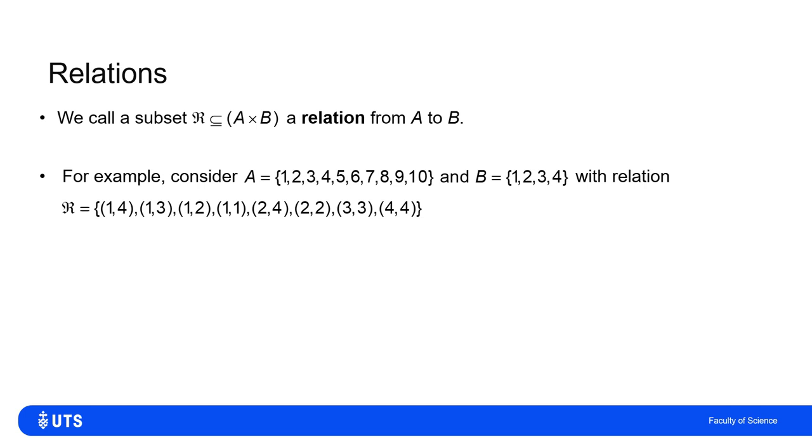Now you might be able to see what sort of relation this is describing. In logical notation, we can say the subset R is the set of ordered pairs (a, b) where a comes from A and b comes from B, and a divides b. Because one divides four, one divides three, one divides two, one divides one, two divides four, and so on.